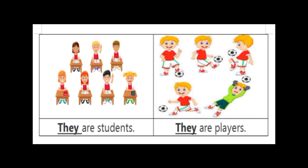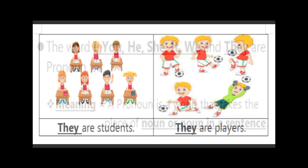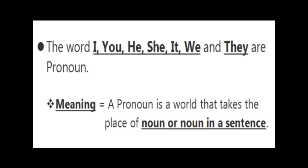Next picture, there are some boys playing with football. Here the sentence is 'They are players.' Yeh sabhi khiladi hai, sabhi ko mention karne ke liye T-H-E-Y, they. So the words I, you, he, she, it, we and they are pronouns. In all the sentences we already saw these words. Ye words kya hai? Pronoun hain.